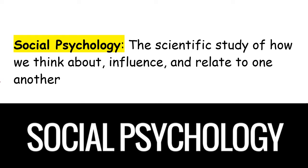We are in the social psychology unit. Social psychology, as a reminder, is looking at why we act the way we act based on the influences of the people around us. So how does society determine the way we act? What influence do our friends, family, TV, media, and just every different level of society play a role in how we act, how we behave, and how we think?